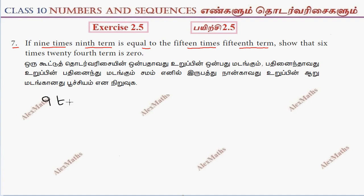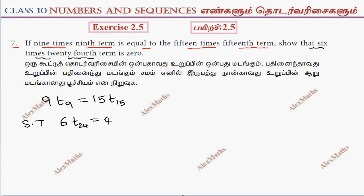9 times the 9th term is 9 into T9, and 15 times the 15th term is 15 into T15. Show that 6 times the 24th term — T24 — is equal to 0.